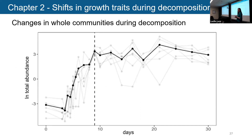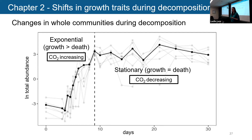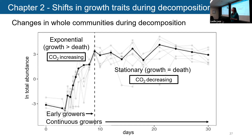I incubated these, took growth estimates, and also took CO2 measurements to get an idea of the carbon flux throughout this process. One thing I noticed is that the total abundances of the communities go through very distinct phases. There's an exponential phase where growth is exceeding death, and then communities transition into a stationary phase where growth is equivalent to death. CO2 emissions from these communities tend to be increasing during the exponential phase and decreasing during the stationary phase. I wondered: is there a difference between microorganisms that only grew during this early phase versus ones that continued growing throughout — which I called early and continuous, respectively?